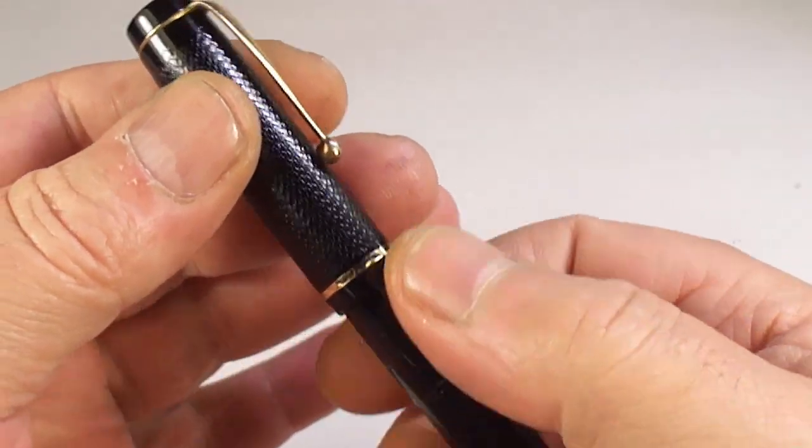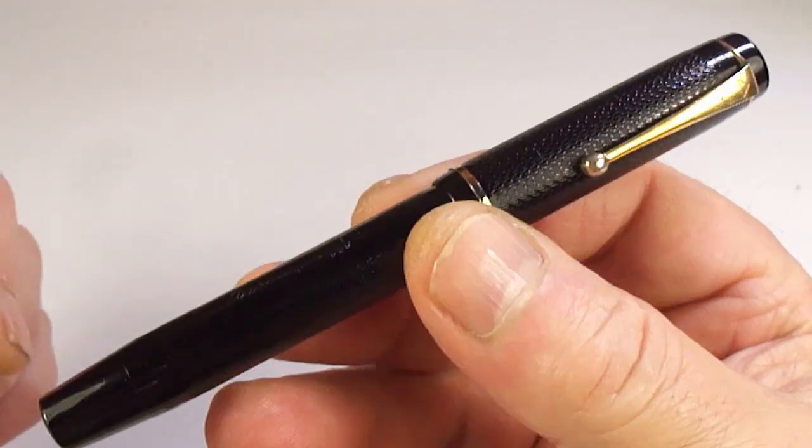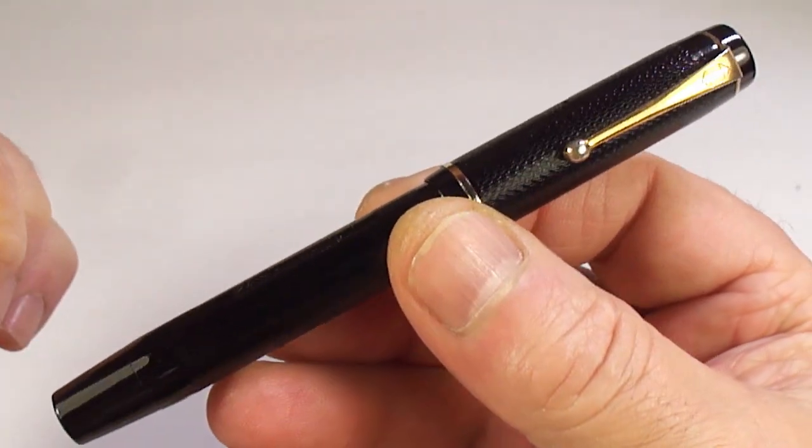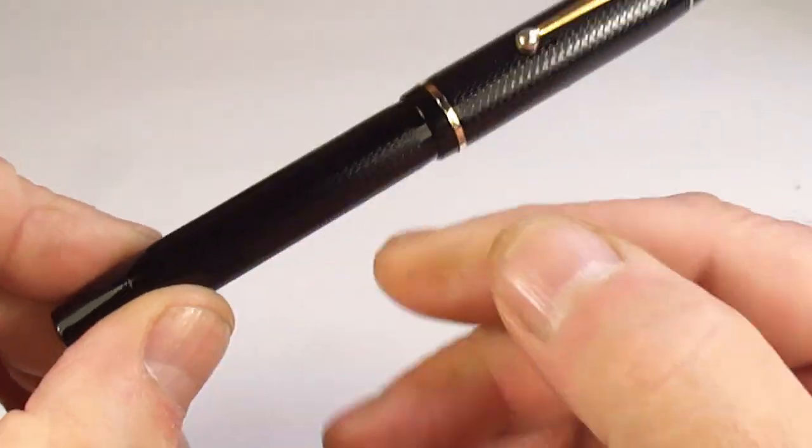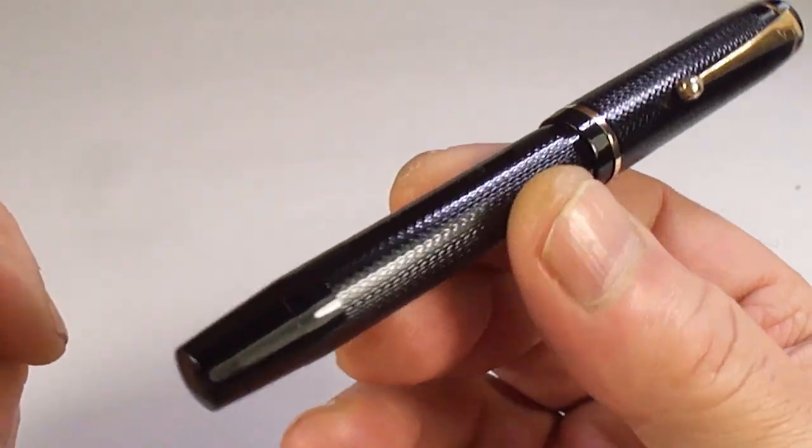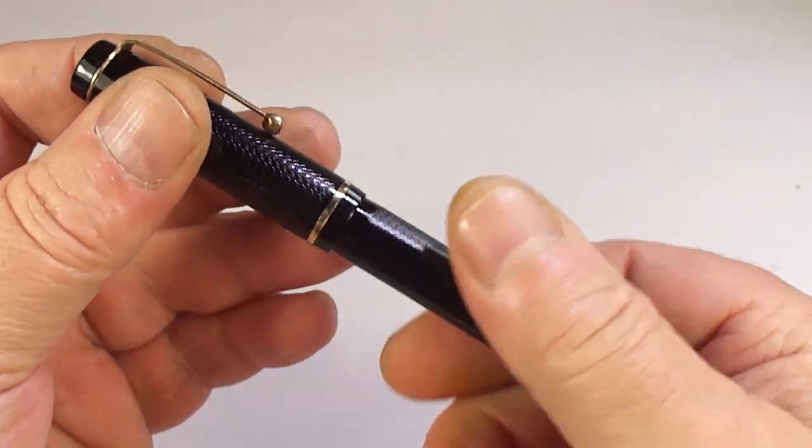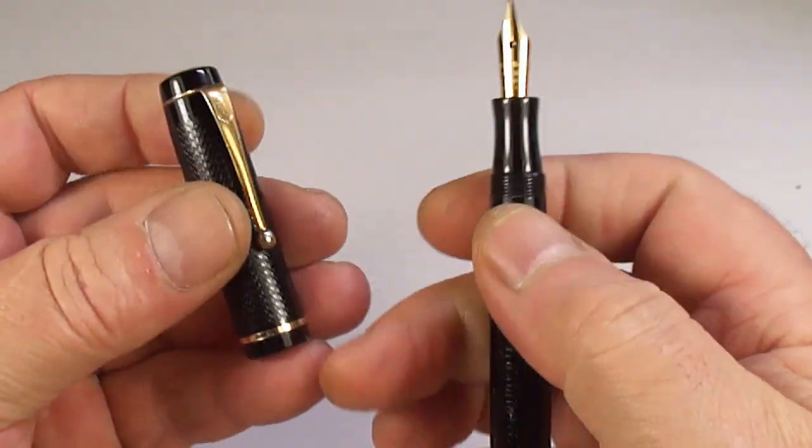Oh, before I take the cap off, let's give you the size. The size of this pen is a very attractive 128 millimeters capped around the barrel. It's a lovely chunky 12 millimeters in diameter. So a lovely, lovely sized fountain pen.